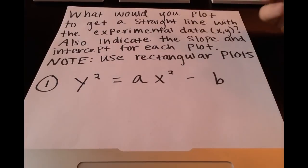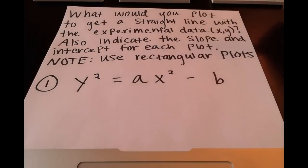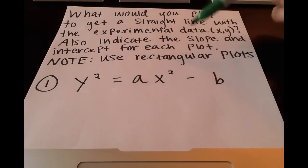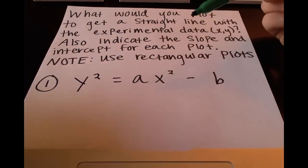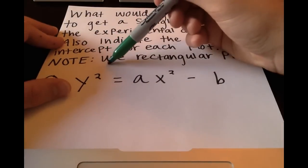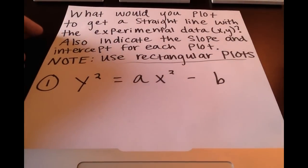Looking at a specific example, this is what a problem might say: What would you plot to get a straight line with the experimental data x, y? Also indicate the slope and intercept for each plot. The special note here says use rectangular plots rather than semi-log plots, which are easier in my opinion.